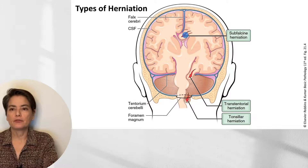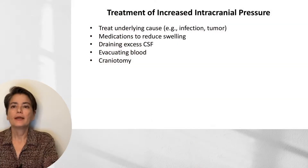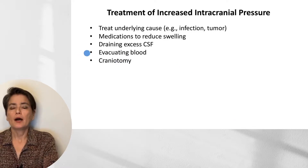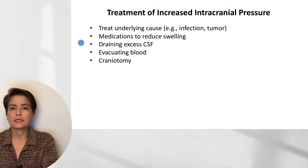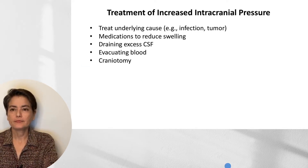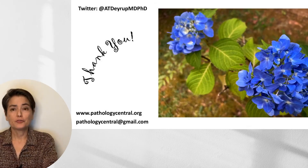To finish up, here is a reminder of the three types of herniation we just discussed: subfalcine, transtentorial, and tonsillar. We really don't want our patients to herniate because it has catastrophic consequences. When a patient has symptoms suggestive of increased intracranial pressure, it's time to start thinking about treatment — treating the underlying cause such as infection or tumor, evacuating a subdural hematoma to give more space for the brain, using medications to reduce swelling, draining excess cerebrospinal fluid, or in some instances performing a craniotomy to remove a portion of the skull so the brain can swell into that area.